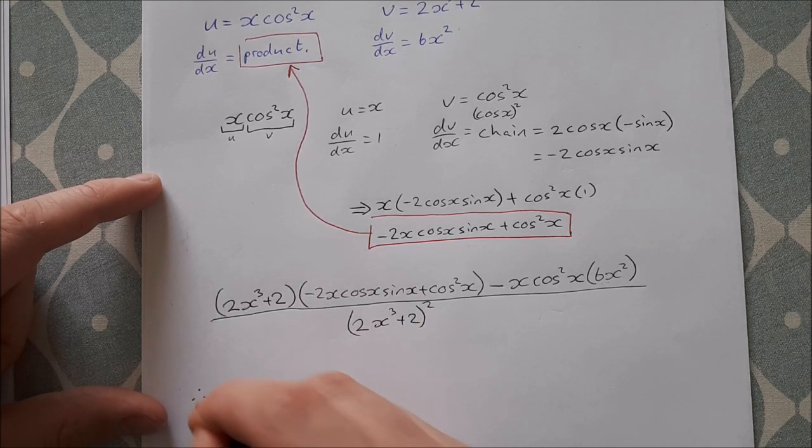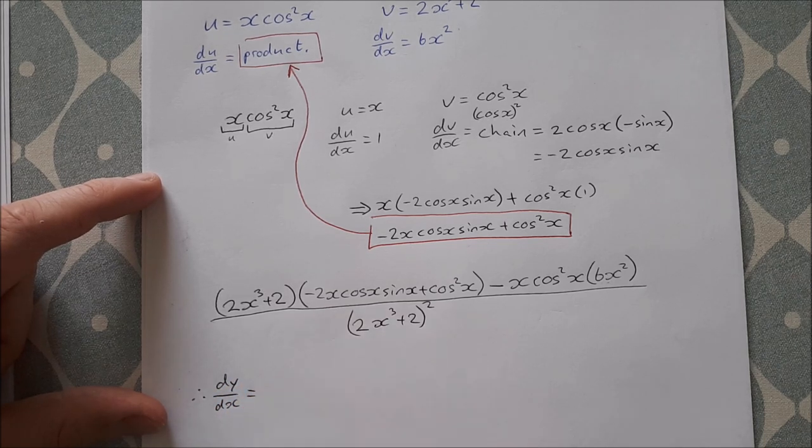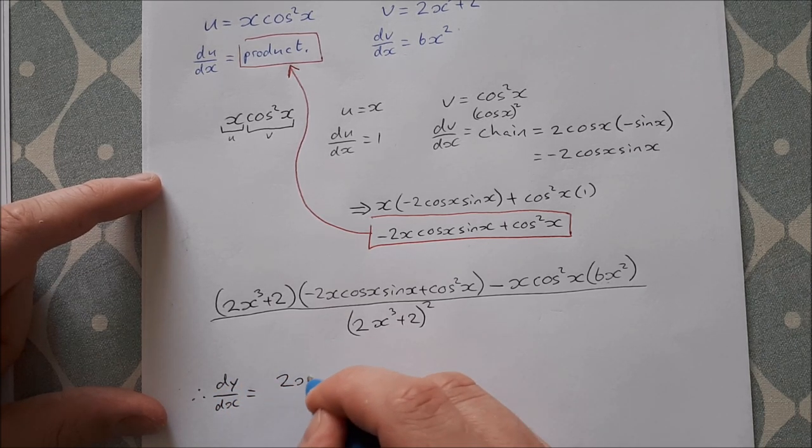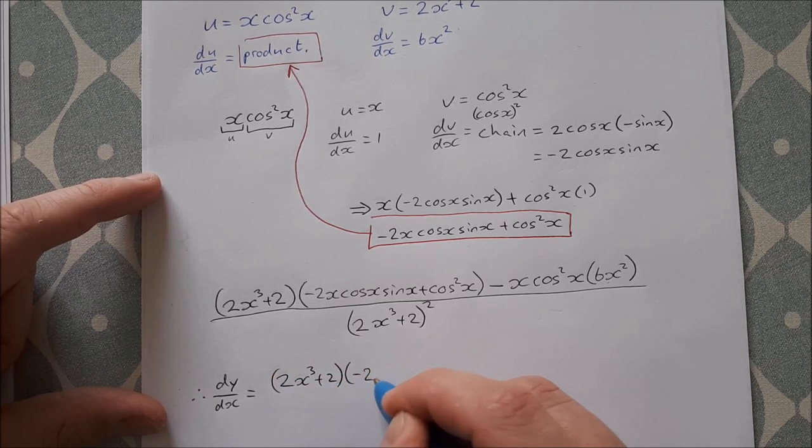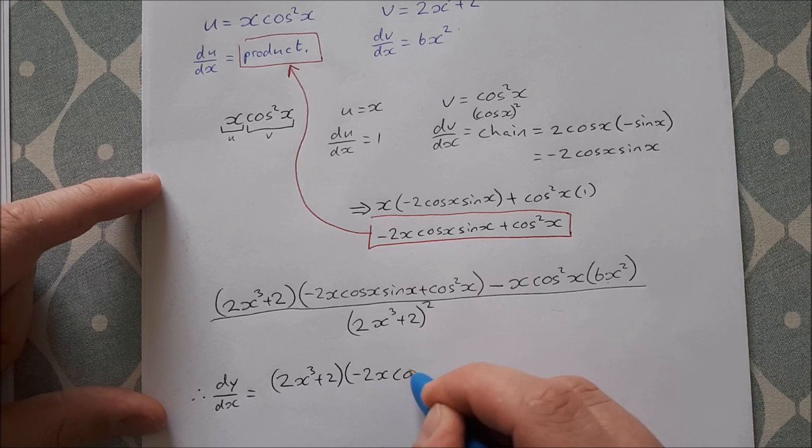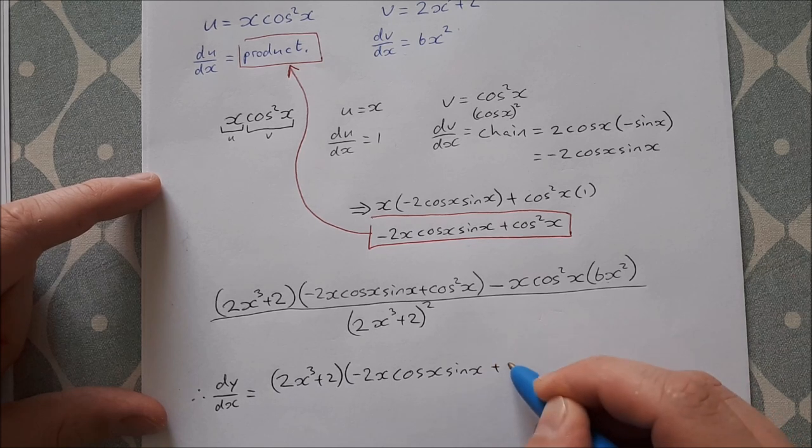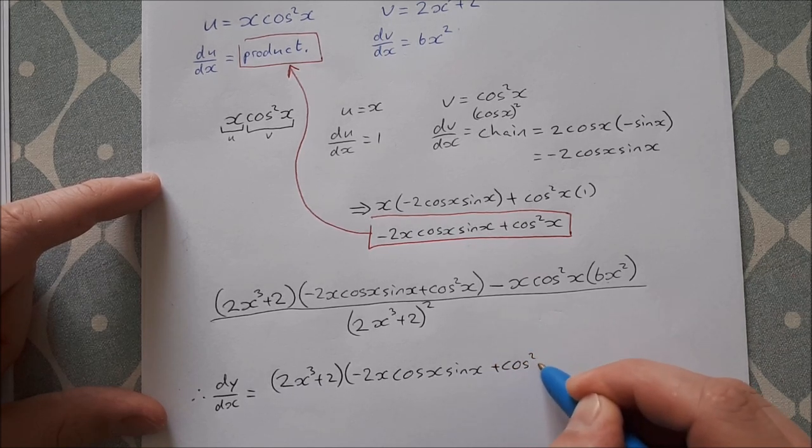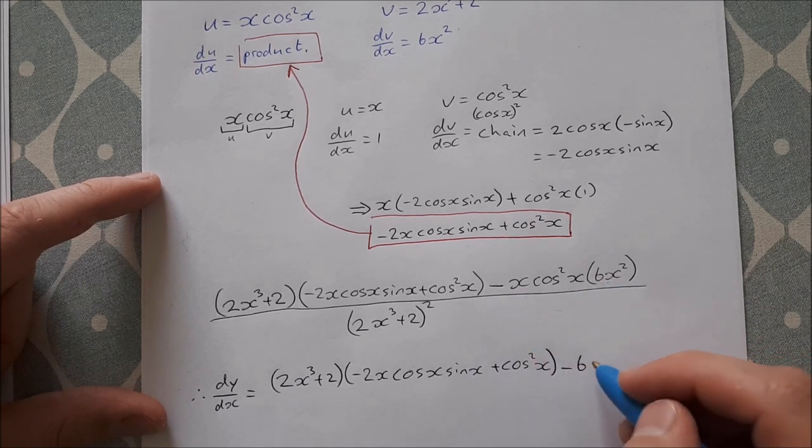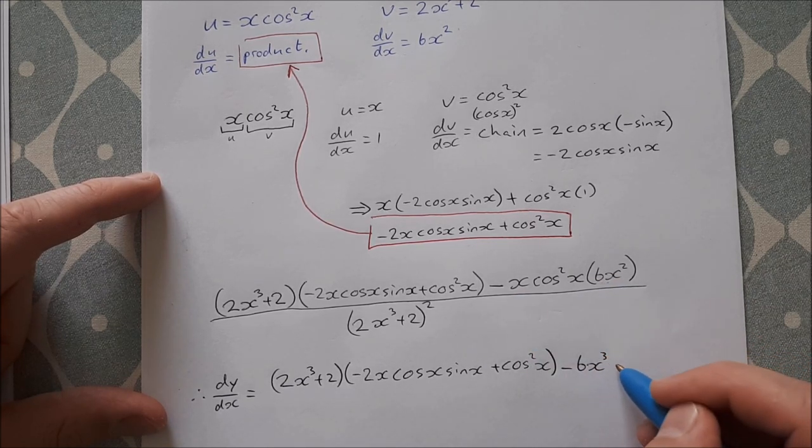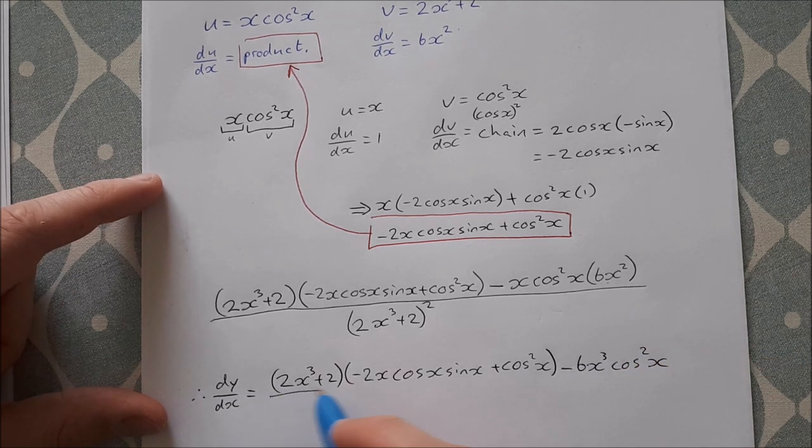So therefore dy/dx, my derivative that I'm looking for, is (2x³ + 2)(-2x cos x sin x + cos²x) - 6x³ cos²x all over (2x³ + 2)².